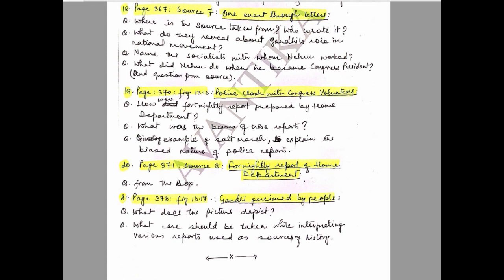Question 20: Page 371, Source 8 — Fortnightly Report of Home Department. Questions are to be attempted from the box. Question 21: Page 373, Figure 13.17 — 'Gandhi as Perceived by People.' Questions: What does the picture depict? What care should be taken while interpreting various reports using them as sources of history? This ends this segment.